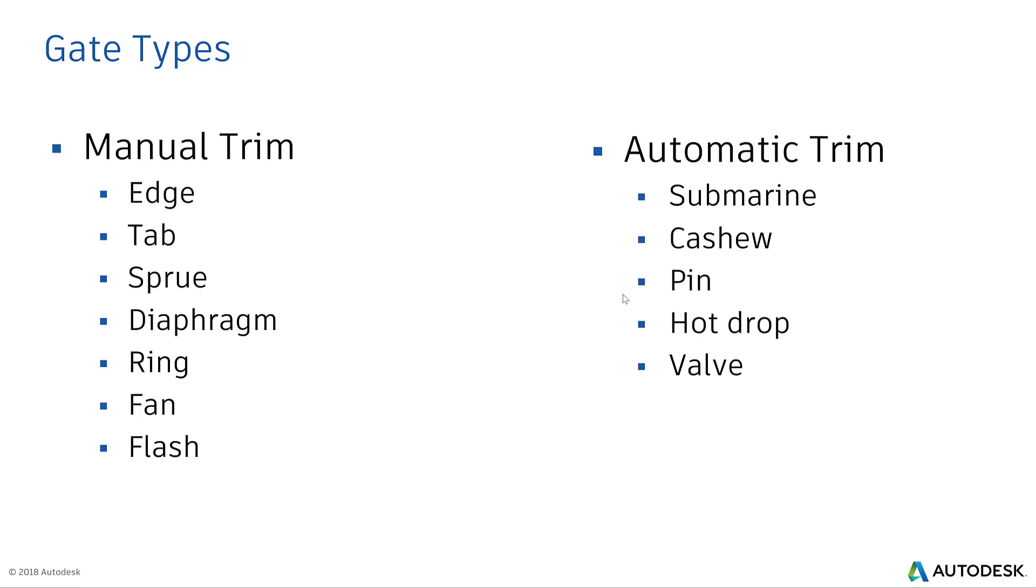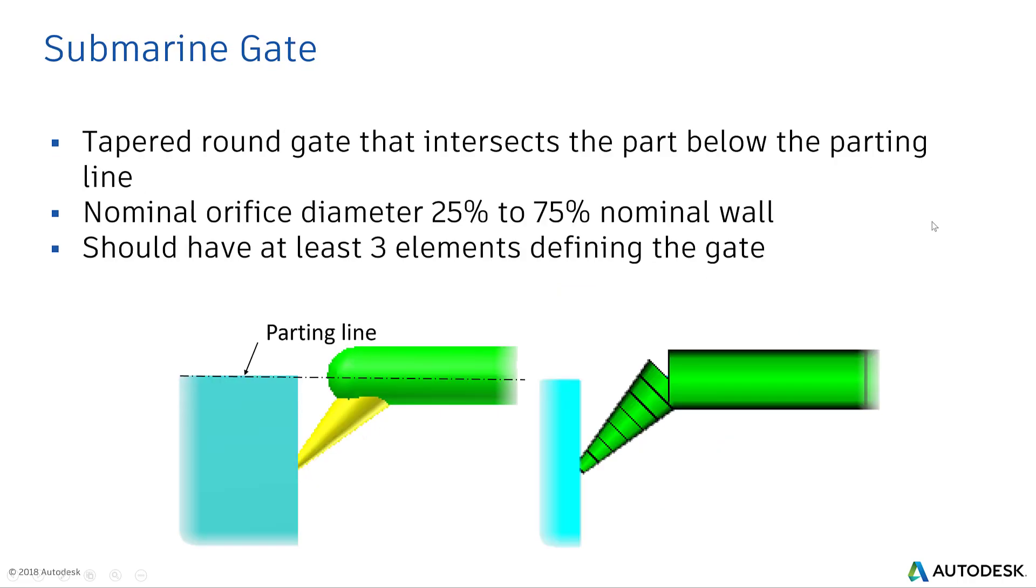One type of gate that I want to discuss is the submarine gate. A gate that intersects the part below the parting line. Normal orifice diameter is in the range of 25 to 75% of the nominal wall, and as best practice should have at least three elements defining the gate.